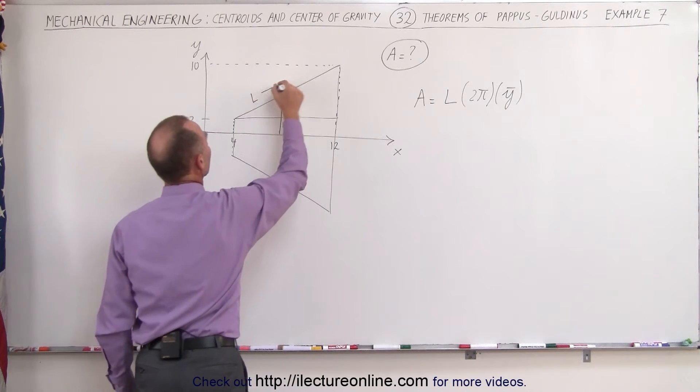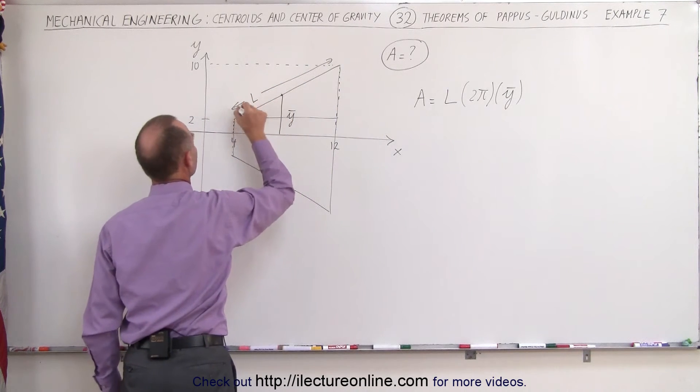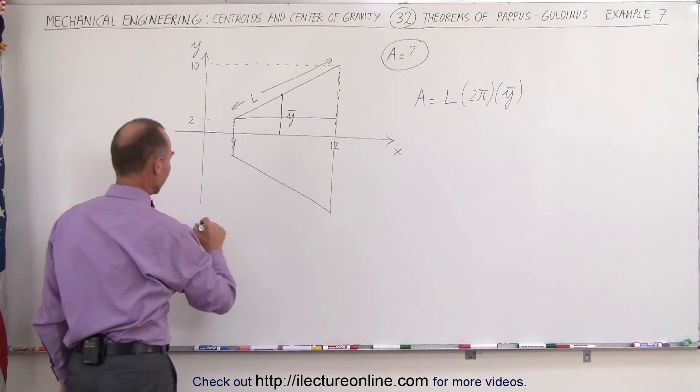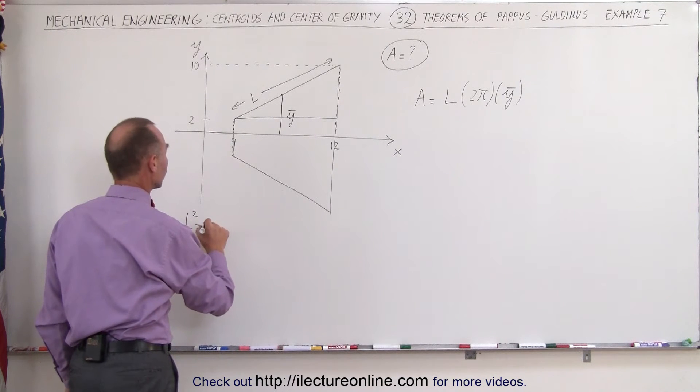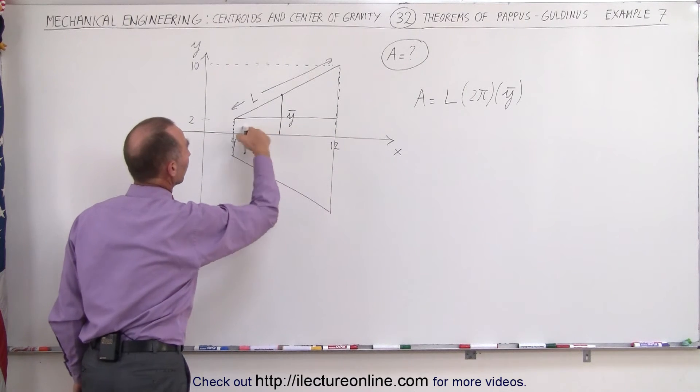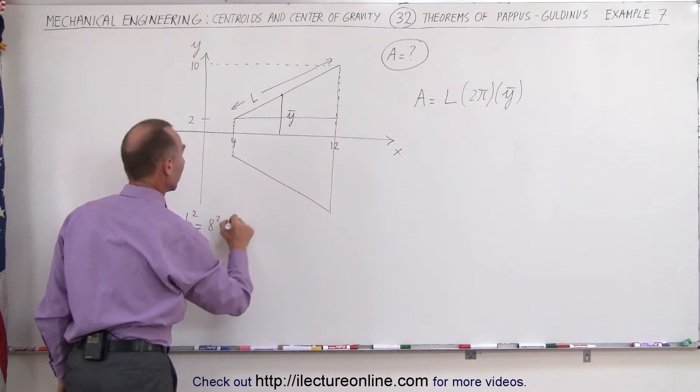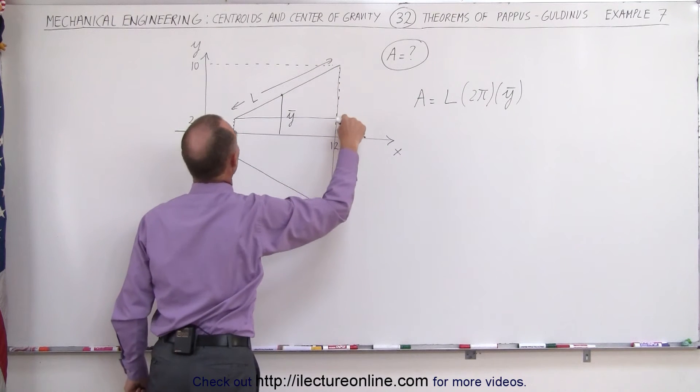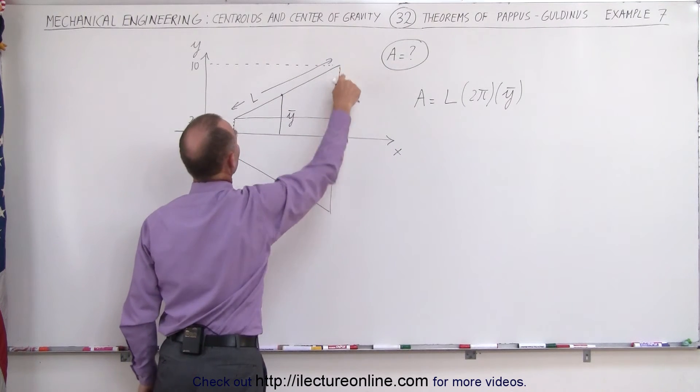This is the length from there to there. We can then say that the length squared is equal to the sum of the squares of the two sides. This distance here would be 8 squared and this distance from there to there would be from 2 to 10. That also would be 8.